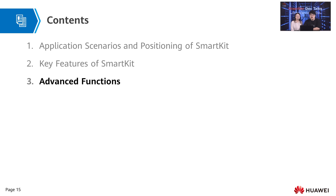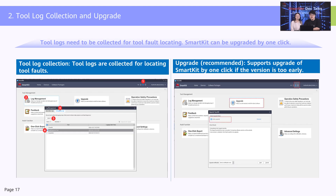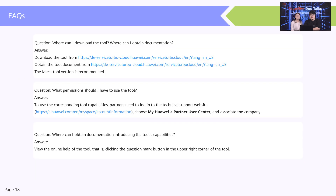SmartKit allows you to set scheduled tasks for added devices, requiring no manual operation. SmartKit automatically performs device inspection or hardware inspection tasks at a specific time. You can use connectors on SmartKit to locate its own faults. In addition, you are advised to use the online upgrade function provided by SmartKit to upgrade the entire toolkit, so that you do not need to reinstall the function plugins that were installed before the upgrade.